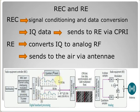This process is similar to PCM — we have the sampling, making a signal digital, and sending it via CPRI to the RE. The RE then converts the IQ data to analog RF and sends it to the air via an antenna.